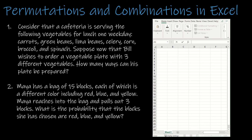Here are two practice questions to try on your own. First: a cafeteria serves seven different vegetables — carrots, green beans, lima beans, celery, corn, broccoli, and spinach. Bill wants a vegetable plate with three different vegetables. How many ways can this plate be prepared? A plate with lima beans, celery, and spinach is the same as one with celery, spinach, and lima beans — so order does not matter. That's a combination: N = 7, R = 3. There are 35 different plates Bill can have.